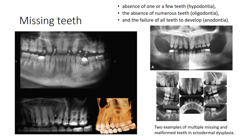Missing teeth: anomalies involving the number of teeth could be due to absence of one or few teeth, in which case it's called hypodontia. The absence of numerous teeth is called oligodontia, and the failure of all teeth to develop is called anodontia. This is an example of two missing teeth and malformed teeth in an ectodermal dysplasia case. The anomaly associated with missing teeth could be associated with a syndrome or may not be.